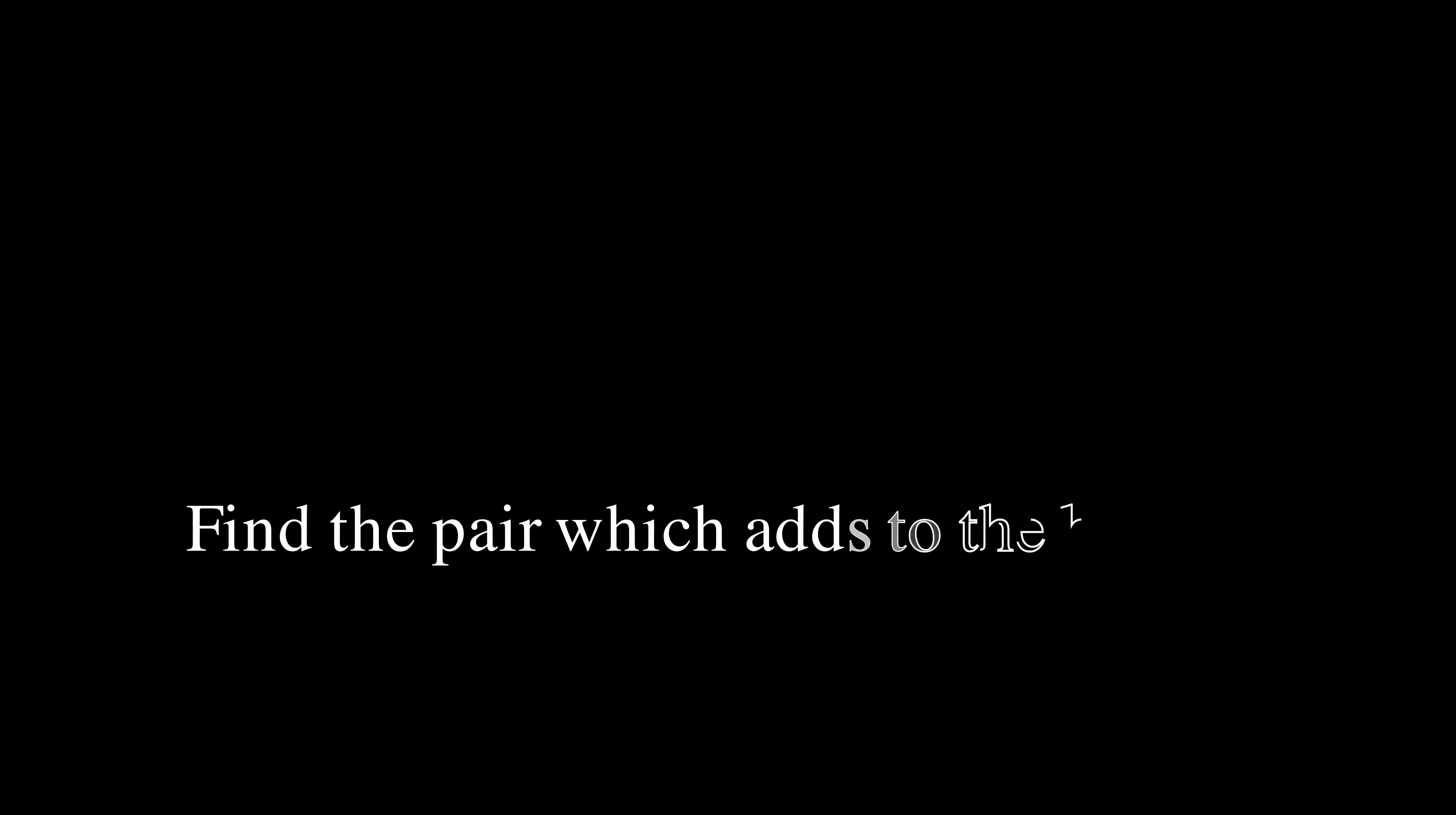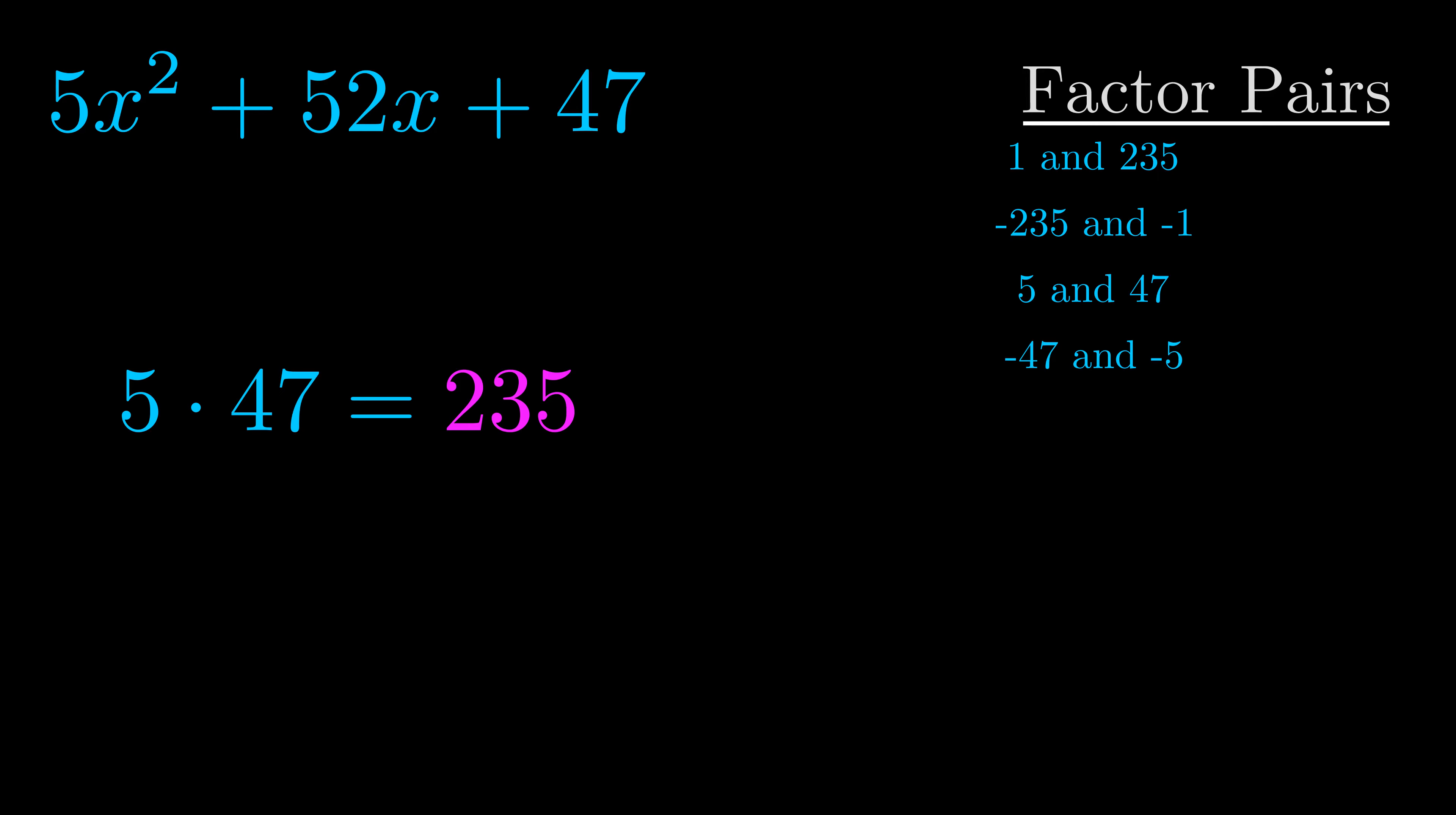The b value is the coefficient on the x term, that's the middle term, the one we haven't done anything with yet. And really this is the only factor pair that we need.